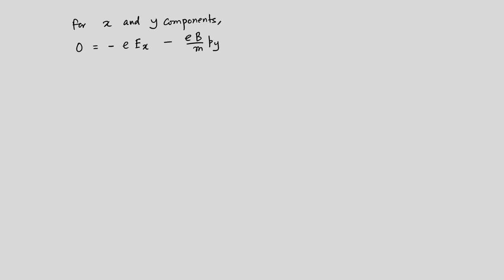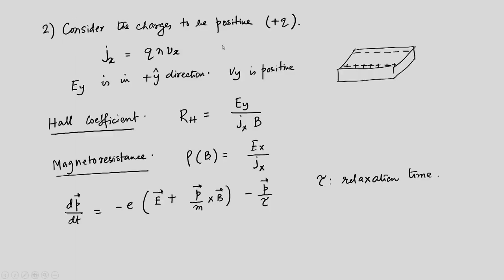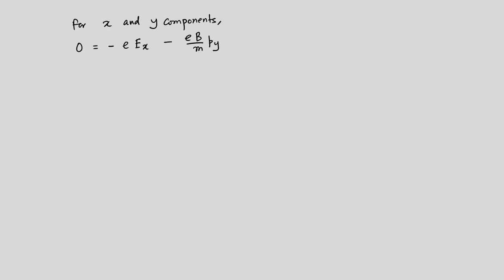For the x and y components, we have: 0 = −eE_x − (eB/m)p_y − p_x/τ, and a corresponding equation for y. The electric field has both E_x and E_y components, and the momentum has both p_x and p_y components. The electronic motion is confined in a plane, so P = (p_x, p_y). B is a constant field in the z-direction.